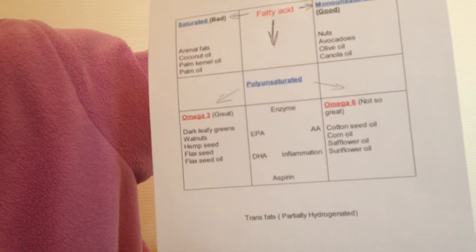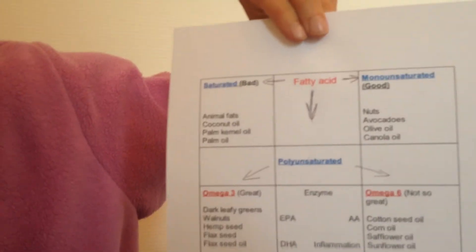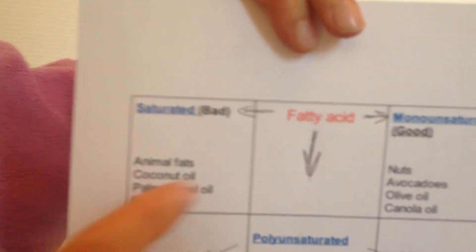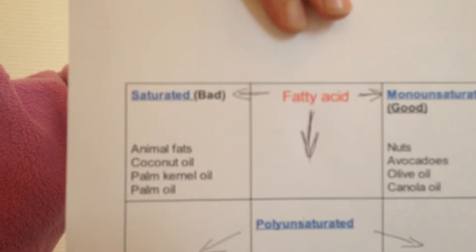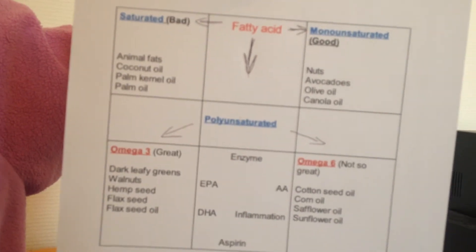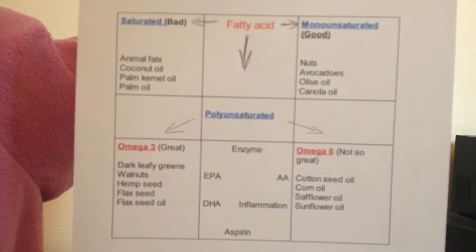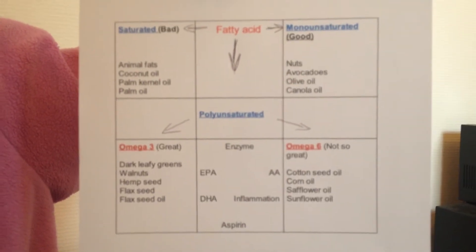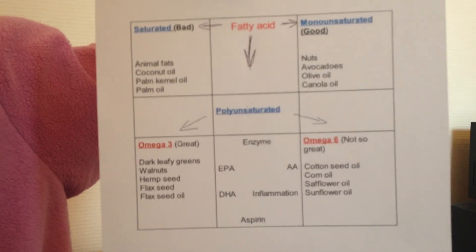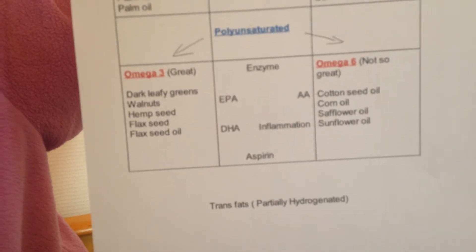Let's talk about trans fats, also called hydrogenated fats. Saturated fat can hold as many hydrogen atoms as possible — it holds the maximum hydrogen atoms it can. But we can take unsaturated fats and add additional hydrogen atoms, and the resulting fat is the trans fat. It is very unhealthy. So whenever you buy a product and you see it contains trans fat or hydrogenated fat, it's better if you don't buy it.